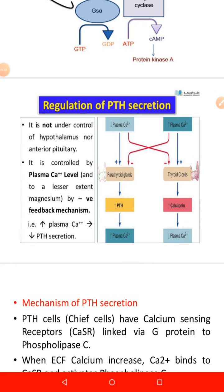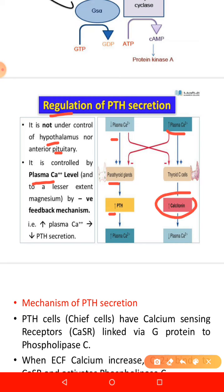The regulation of PTH secretion: blood calcium levels are the main factor controlling PTH secretion. It is not under the control of the hypothalamus or anterior pituitary gland. Whenever calcium levels decrease, the parathyroid glands increase PTH secretion. Conversely, when plasma calcium levels increase, the thyroid C cells are stimulated to secrete calcitonin, while the same high calcium levels inhibit the chief cells from secreting PTH.